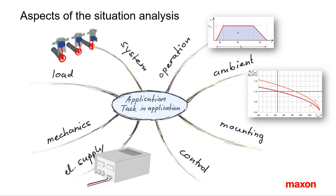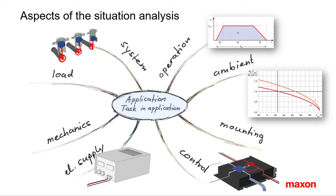Third: electrical supply — how much current and voltage is available? Fourth: control concept — very important. Where do the set value commands come from? What to control: position, speed or torque?